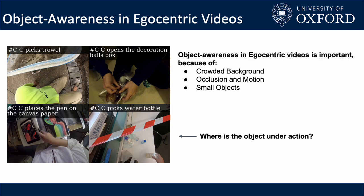Object awareness is important in egocentric videos because videos usually contain crowded backgrounds, occlusion, and large motion, where objects are often tiny and blurred. Hence, visual embeddings learned by simple video-sentence contrastive learning tend to focus on superficial clues and have limited generalization ability.